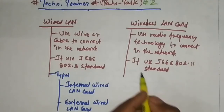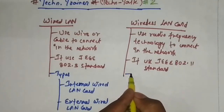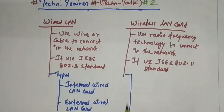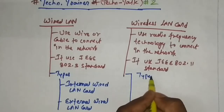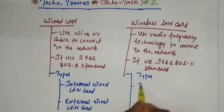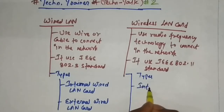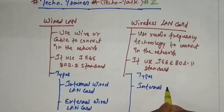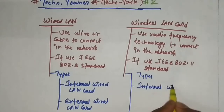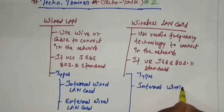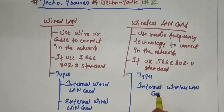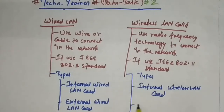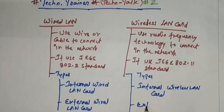On the other hand, the types of wireless LAN card are: internal wireless LAN card and external wireless LAN card.